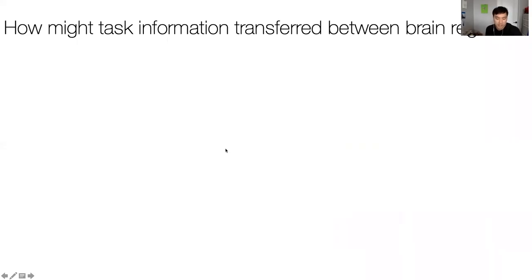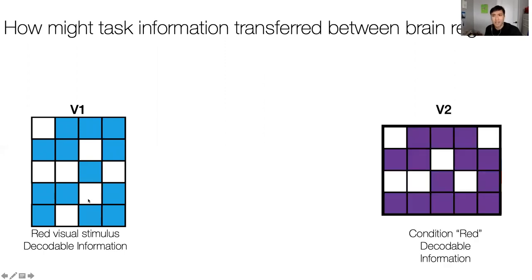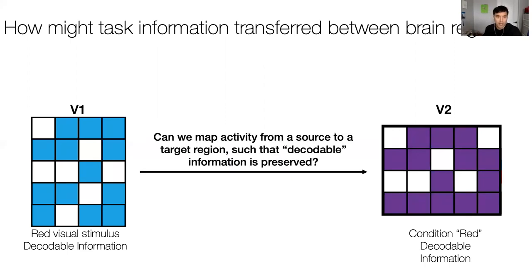Within this framework we can ask more nuanced questions, such as how information is actually transferred between pairs of brain areas. For example, if we have a pattern of activity in V1 containing decodable information about a red visual stimulus, and V2 also contains decodable task information, the question is whether we can map activity from V1 to V2 such that decodable information is preserved—whether there is a function from V1 to V2 that preserves information between those areas.